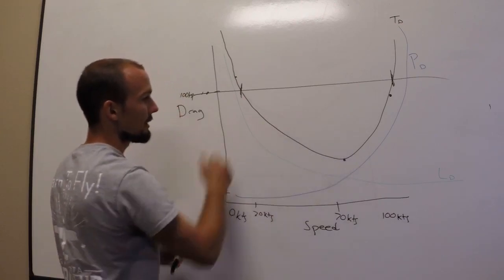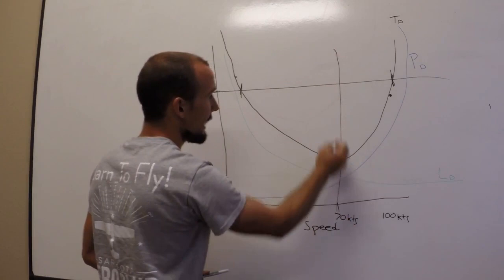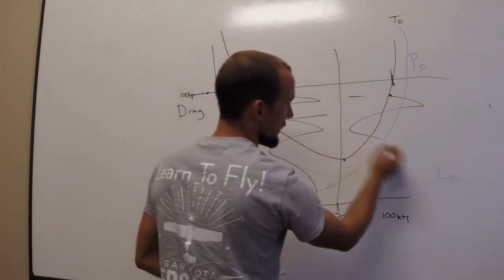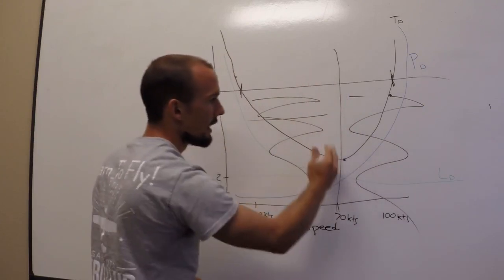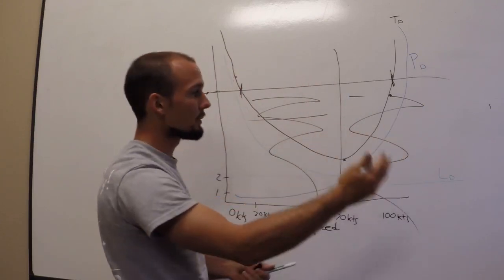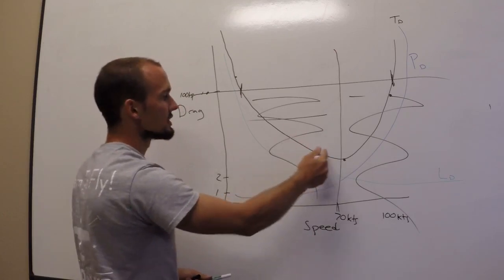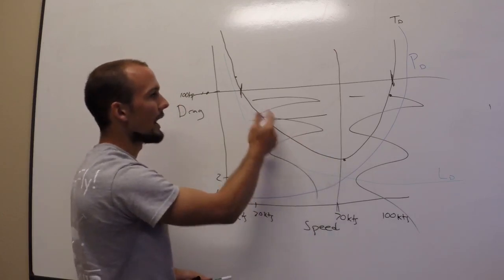So, backside of the power curve, everything from here on back, backside of the power curve. This is the front side of the power curve. We want to stay on the front side of the power curve for most operations. Obviously, during landing, we come onto the backside. That's okay. Just don't get too far back and do a high drag scenario.